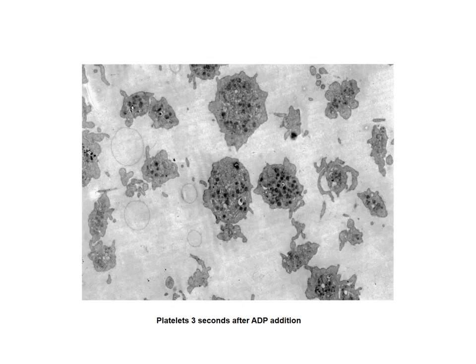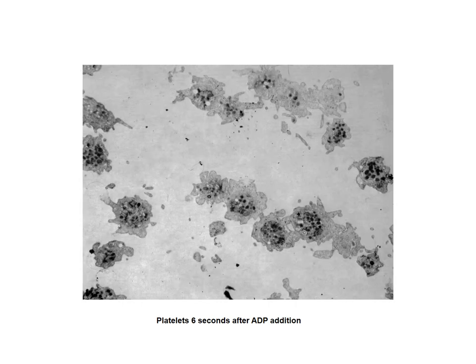A sequence of responses starts as soon as three seconds after addition of ADP. You can see that the perimeter of most of these cells starts becoming irregular — it's not smooth anymore, and many of these cells have many more finger-like projections than before. In addition, within six seconds after addition of ADP, the platelets start making connections with each other, like extending arms and holding to their neighbors.